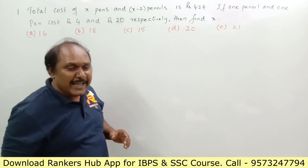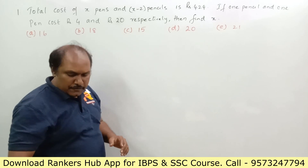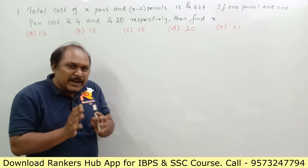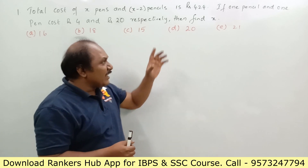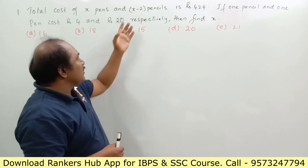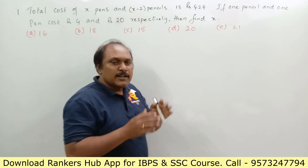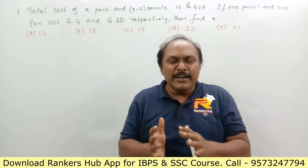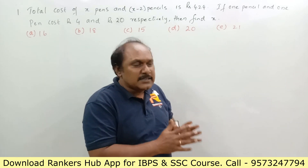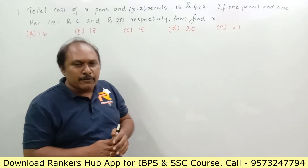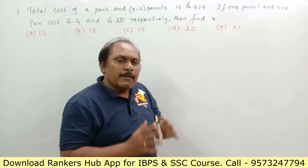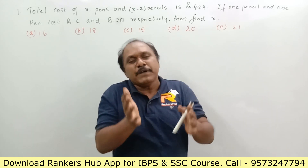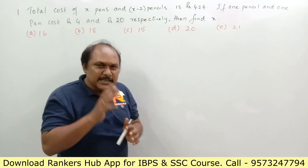Generally what students do is write down the equation: 4 into (x minus 2) plus 20 into x equals 424. Definitely you will get the answer, but think in a different way — how simply can you answer this question?